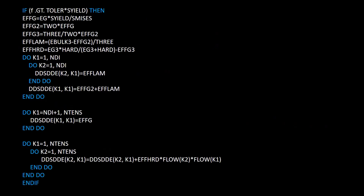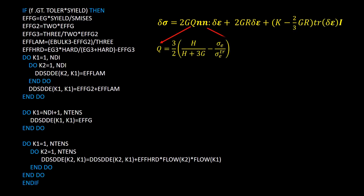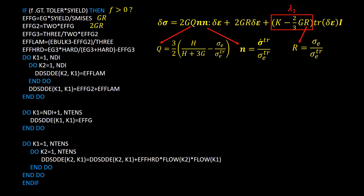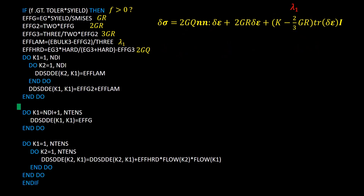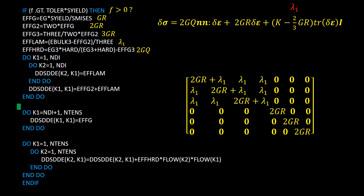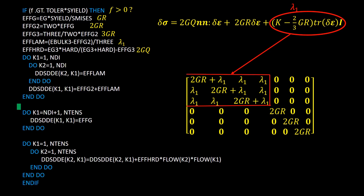The last but not least part of the UMAT is the definition of the Jacobian matrix. If the material is in the elastic region, the Jacobian matrix equals the elastic stiffness matrix and no further calculation is needed. If the material is plastic, additional calculations are required based on the relationship for the Jacobian matrix derived in the previous video — where Q, N, and R are defined accordingly. We name one part as lambda 1. The code calculates GR, 2GR, 3GR, lambda 1, and then 2GQ.